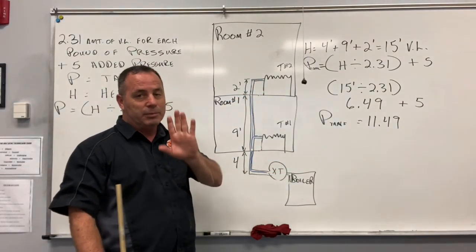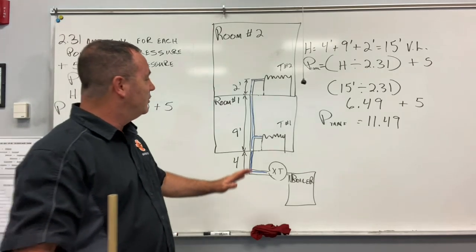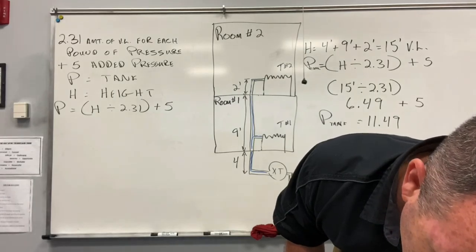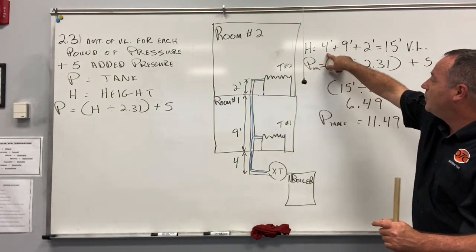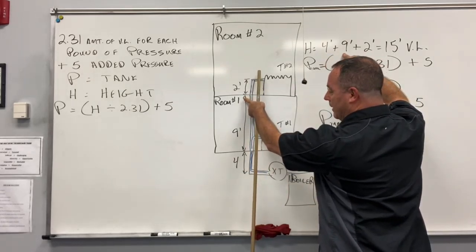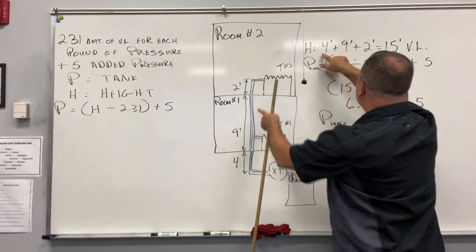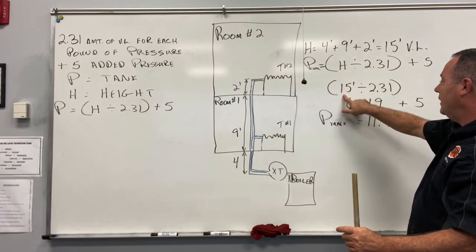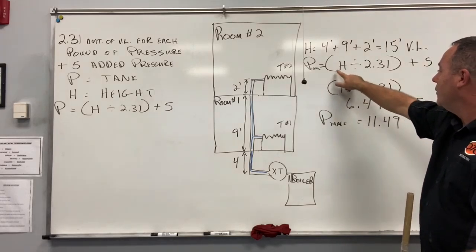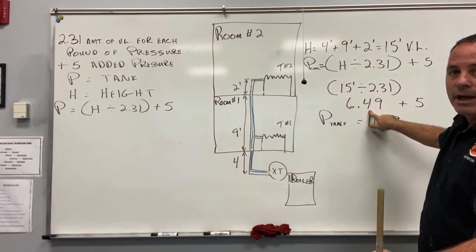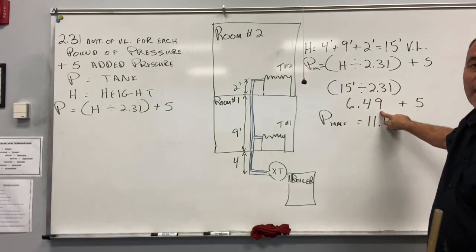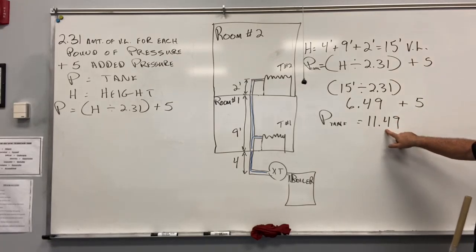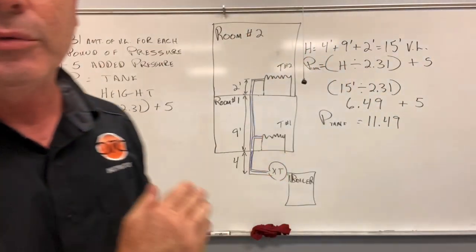Working through the math from page 975: the total height H is 4 + 9 + 9 + 2 = 15 feet of vertical lift. Using the formula: 15 ÷ 2.31 = 6.49, then 6.49 + 5 = 11.49 PSI. So the required expansion tank pressure is 11.49 PSI, which is what the book calculates.